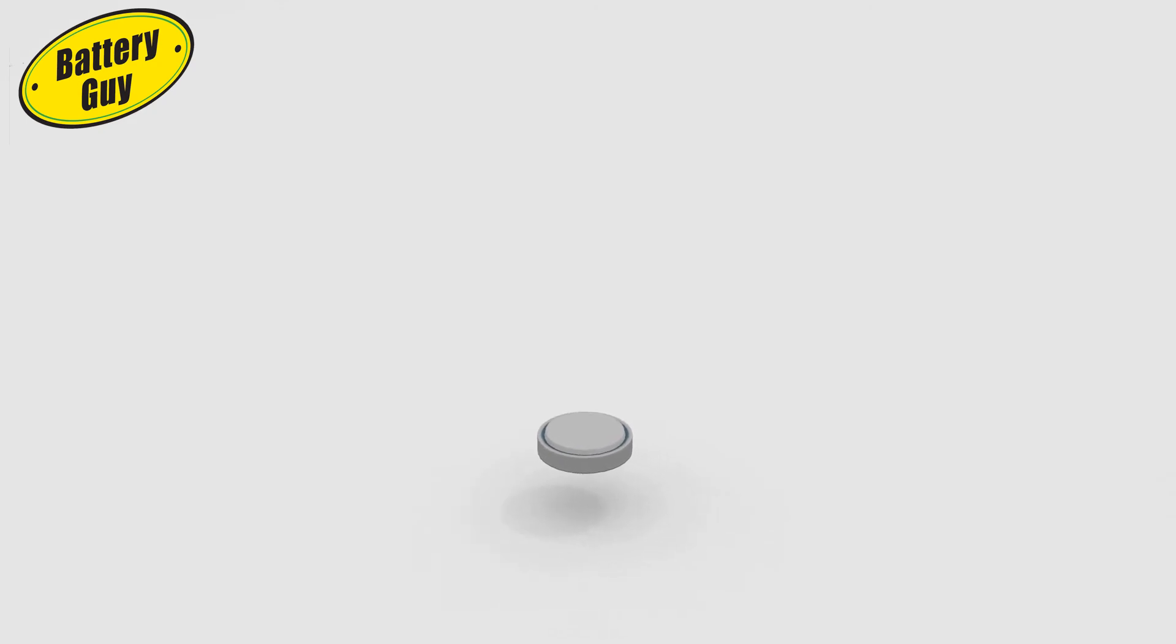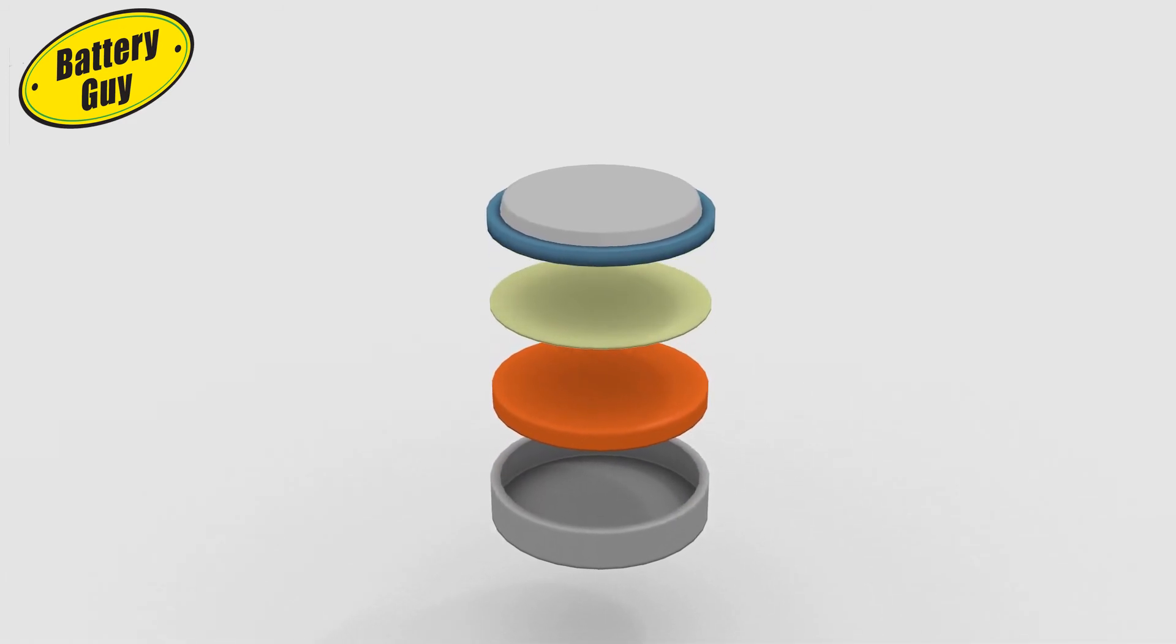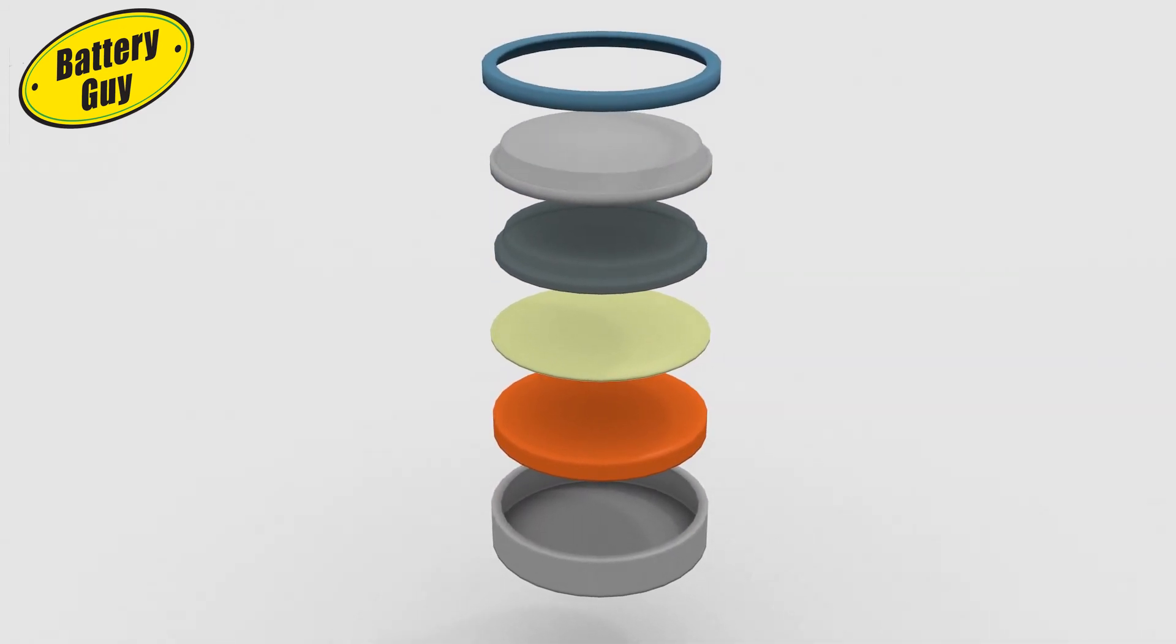Alkaline batteries also come in coin or button cells. They have a simple structure.